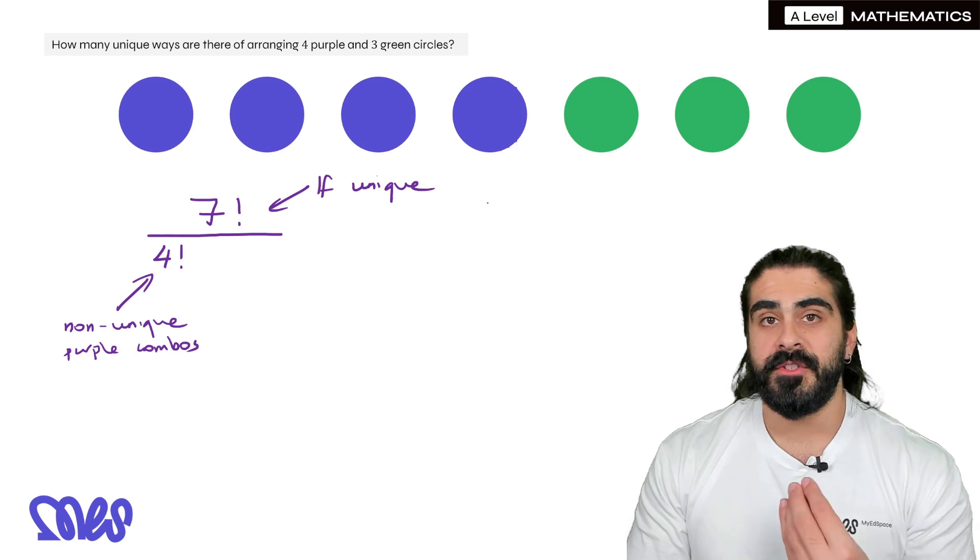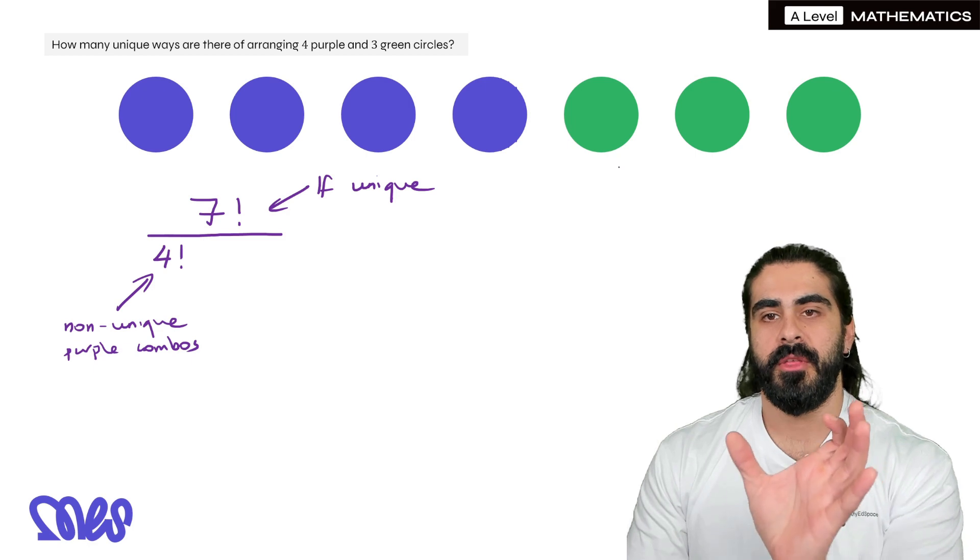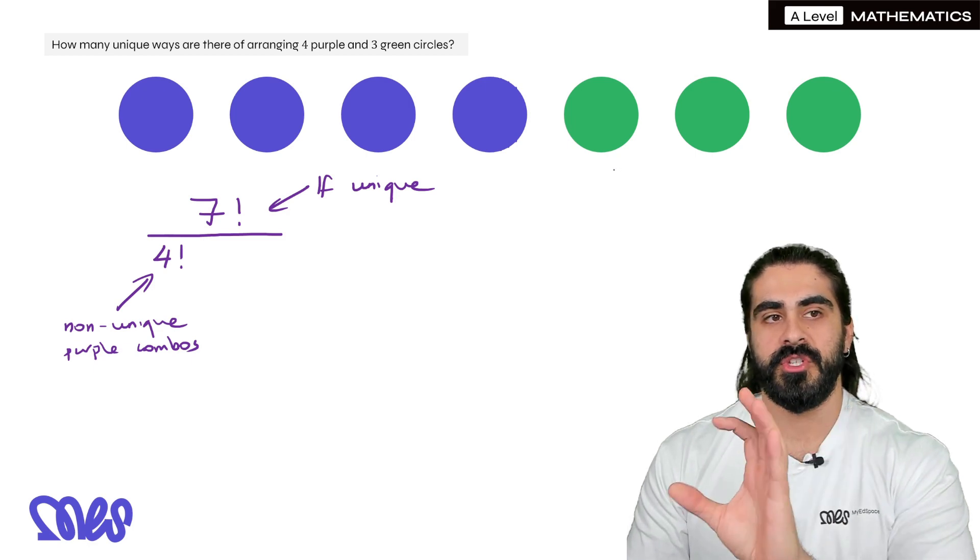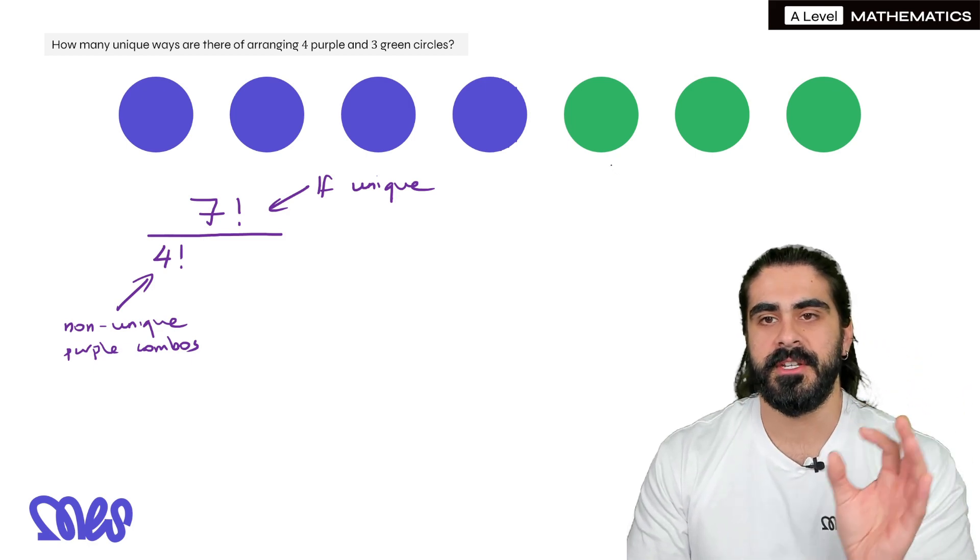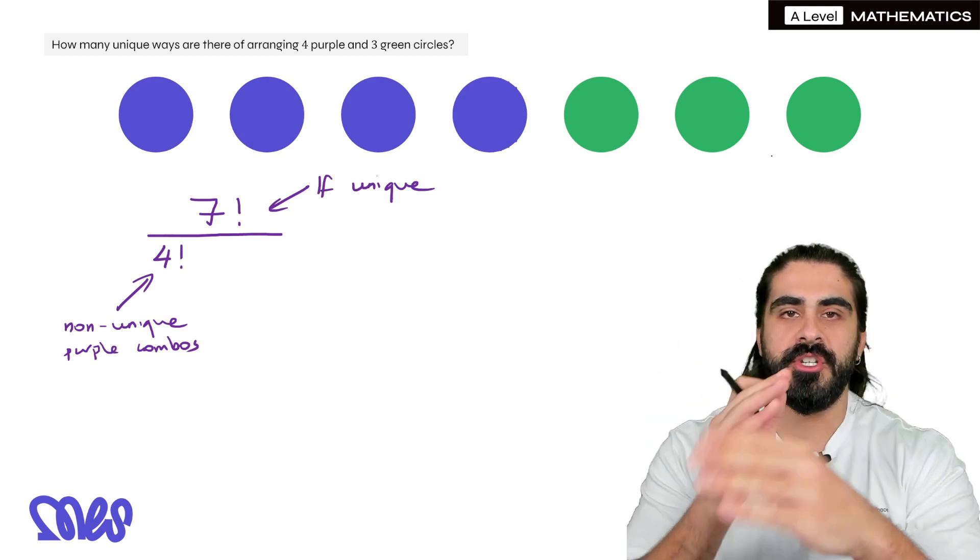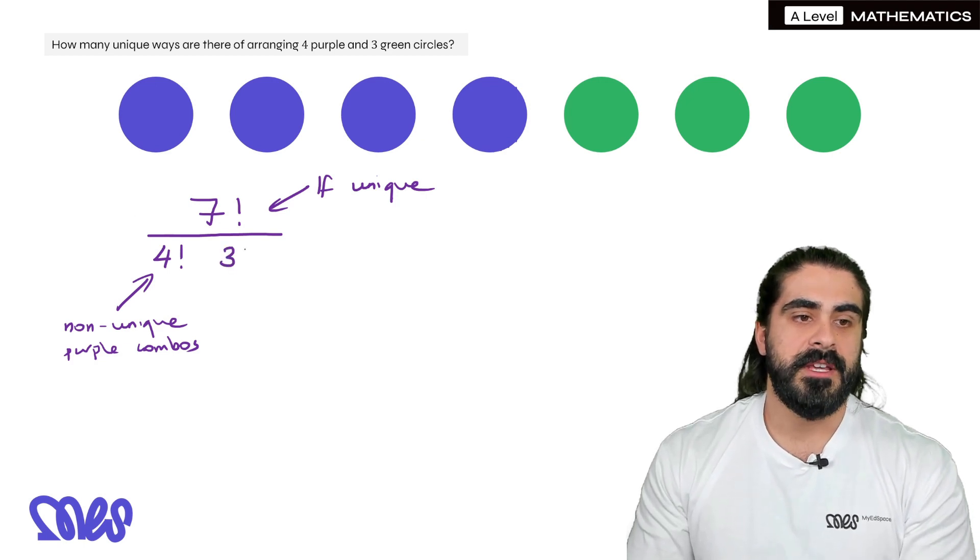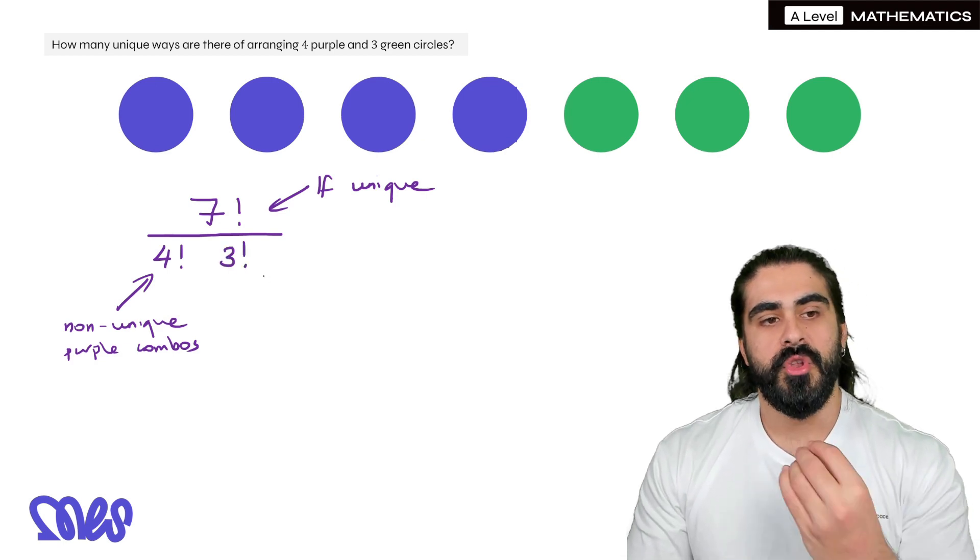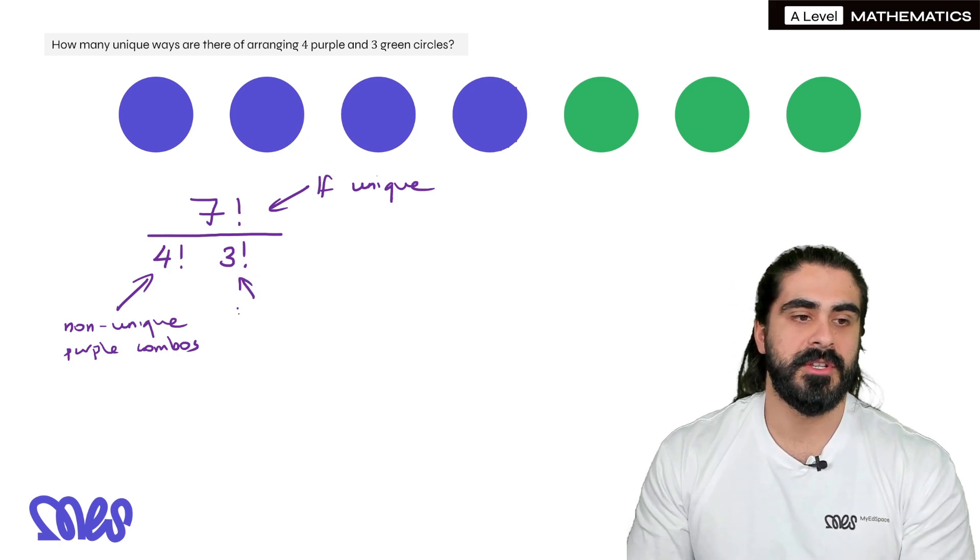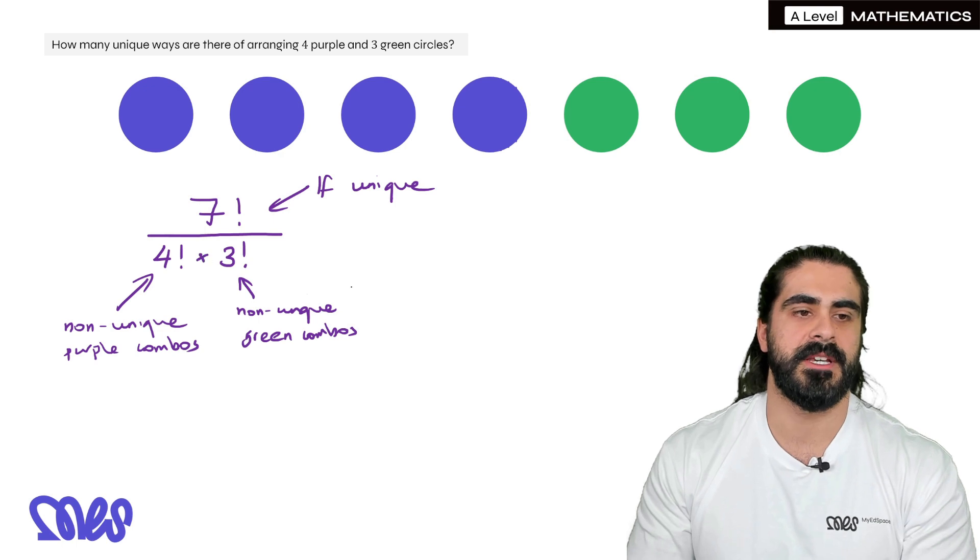And now we have to do the same with the greens. How many different ways are there of arranging those three green objects, which does not change the sequence? Well, similar to the purple, there must be three factorial ways of rearranging those three green objects. So we need to get rid of three factorial non-unique green combos. And between the two, it's just the multiplication.